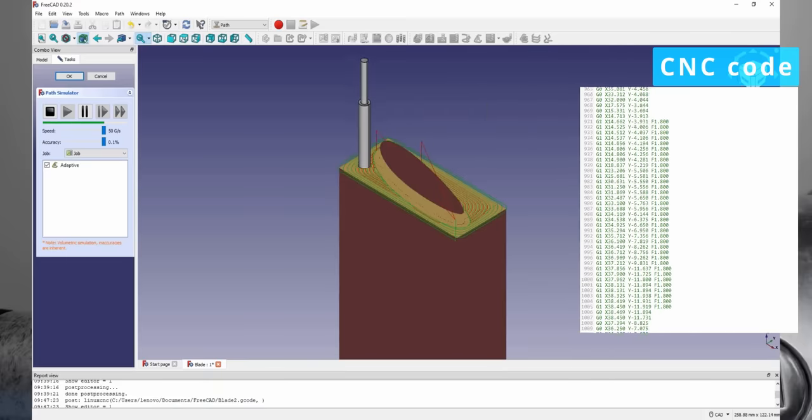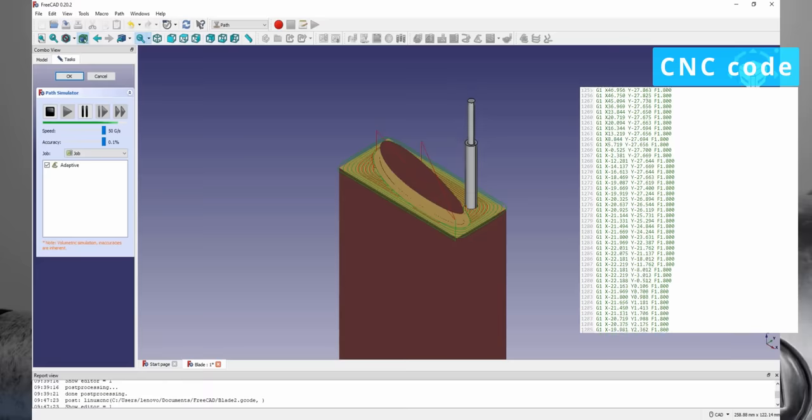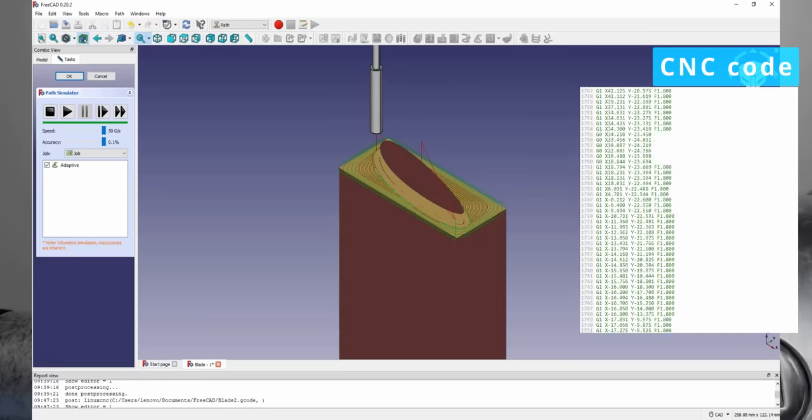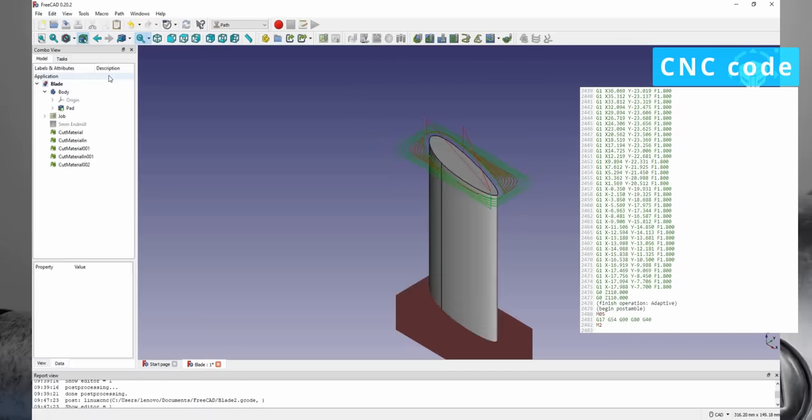However, if you want more accurate control over machining, you can still write this code manually. Now all you have to do is feed this code to your machine.